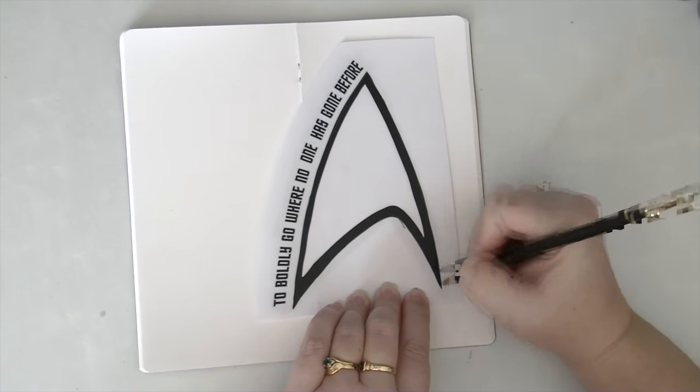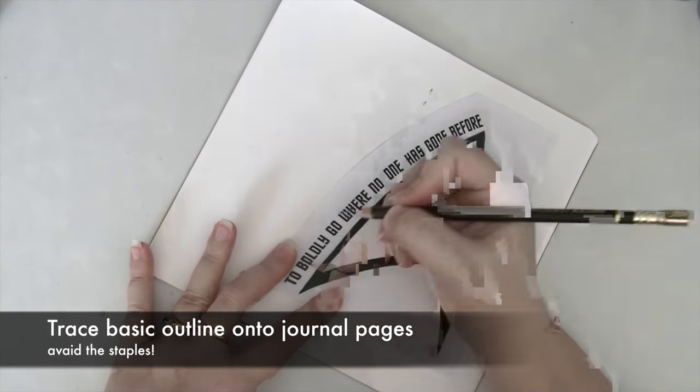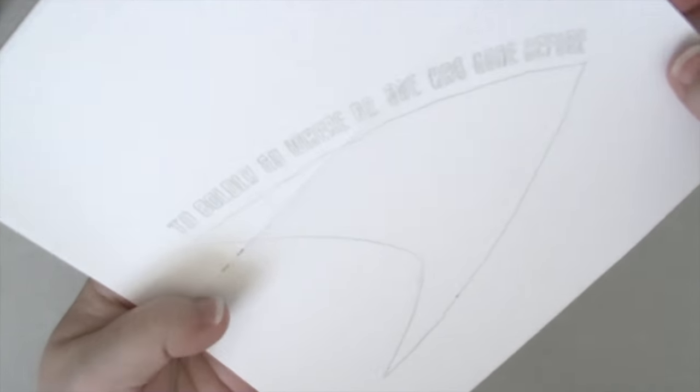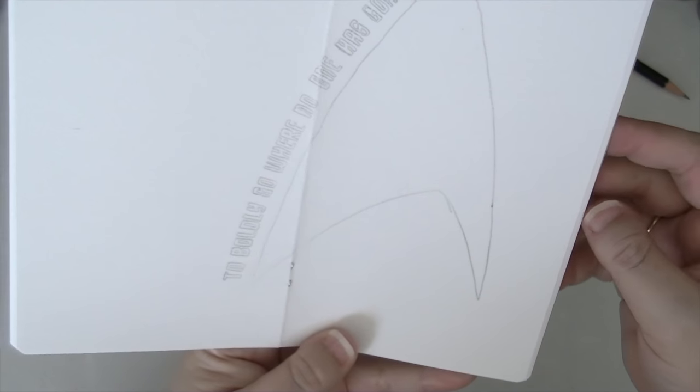Now to get the shape right I have created a template. I've used Word and Photoshop to create this and all I'm going to do now is trace this onto my journal.